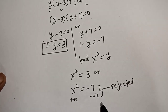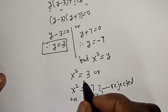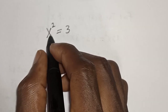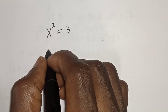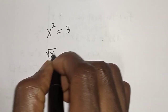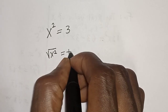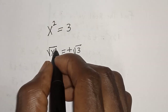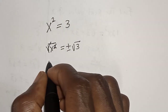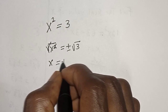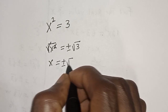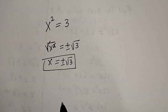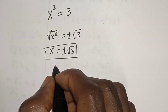Because we have to find the real value of s, and since s² cannot be negative, we reject y = −7. The only valid solution is s² is equal to 3. Taking the square root of both sides, s is equal to plus or minus the square root of 3. This is the final answer.